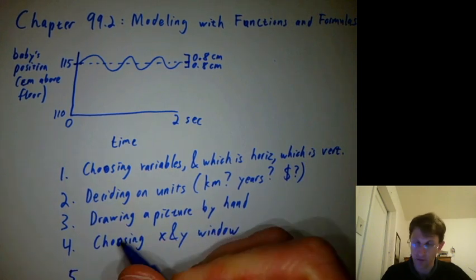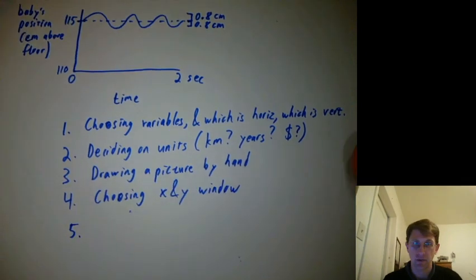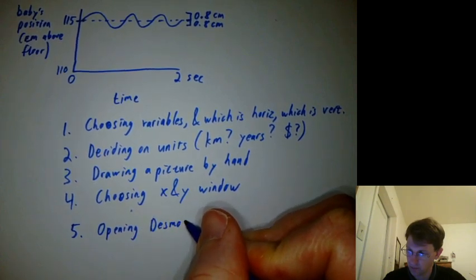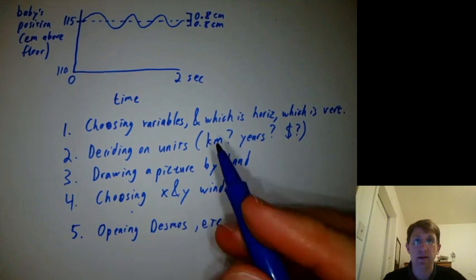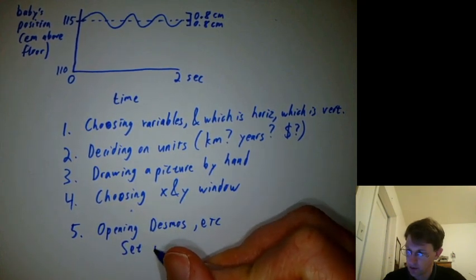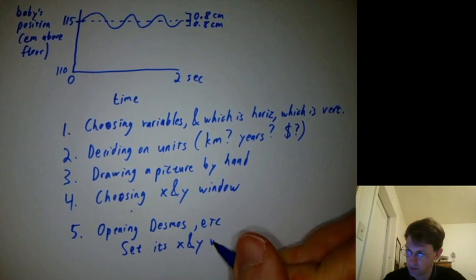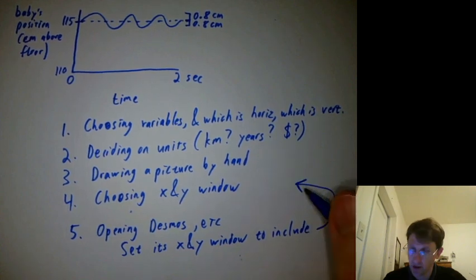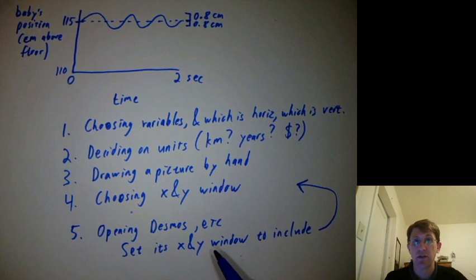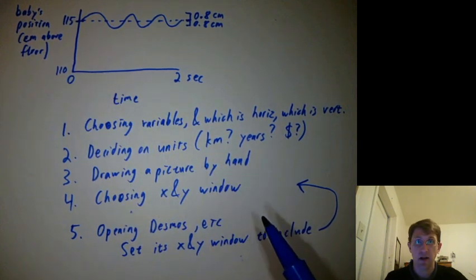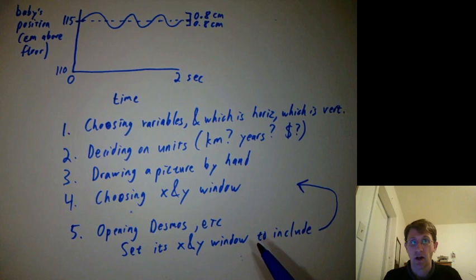And then I'd say step five, which we haven't done here, is opening Desmos or some other kind of thing and setting its x and y window to match what you decided on intuitively here, or at least to include it. Sometimes it's nice if the x and y window includes the origin, even if your Desmos x and y window includes the origin, even if your graph doesn't include the origin like this one doesn't. Because usually the formulas you start out with are near the origin and you need to kind of see them and move them to where you want them to be.